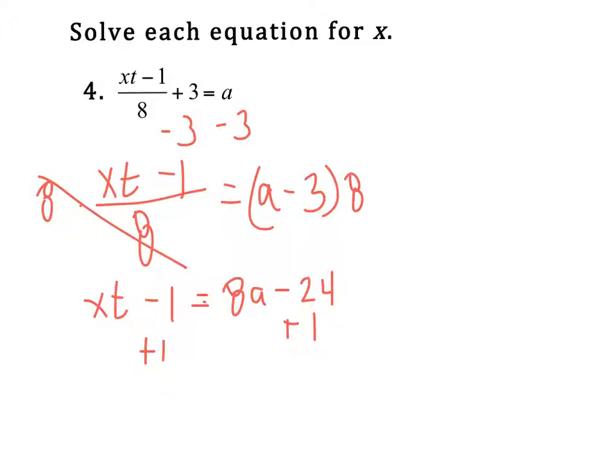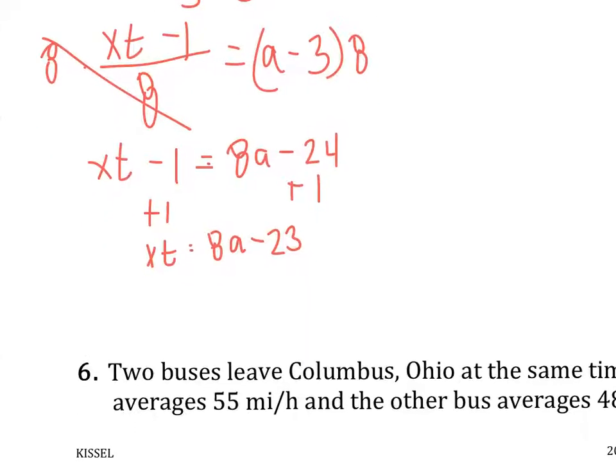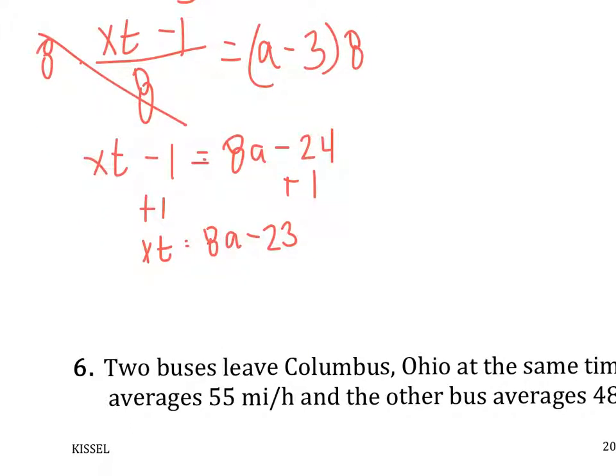I can combine like terms on the right-hand side. I have xt equals 8a minus 23. And that's why we distribute it, is because now we can combine those like terms. And the last step would be to divide by t. Again, ugly answer, but here would be your solution.